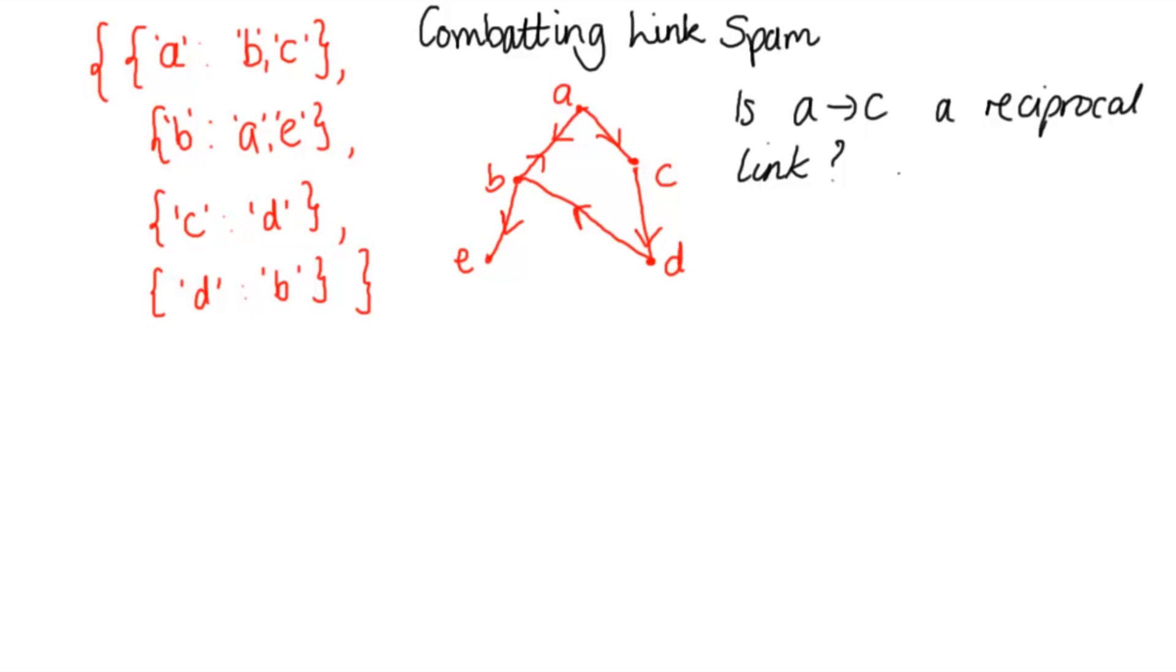It's a reciprocal link if there is a path from C back to A of at most length K, where K is a number given to us. If there is a path back then we won't include A in the calculation for C's rank.